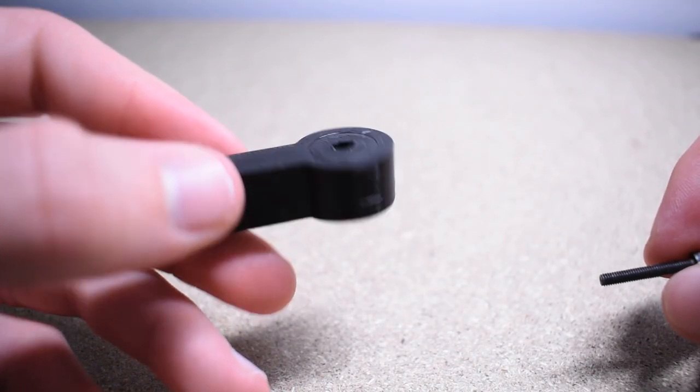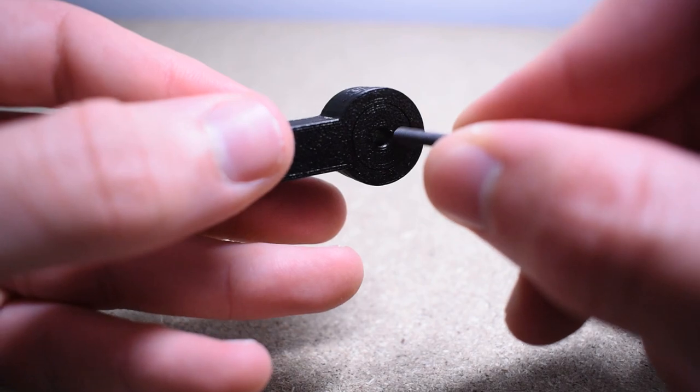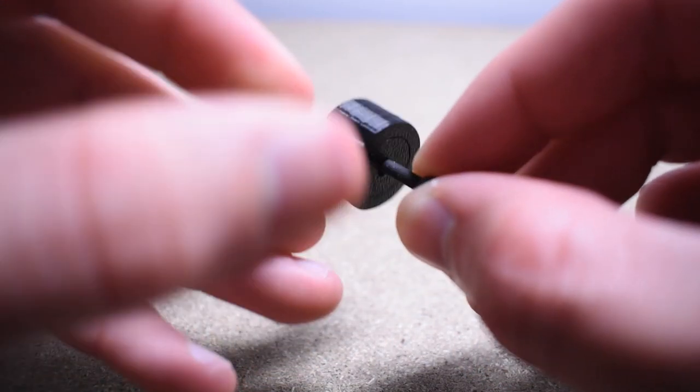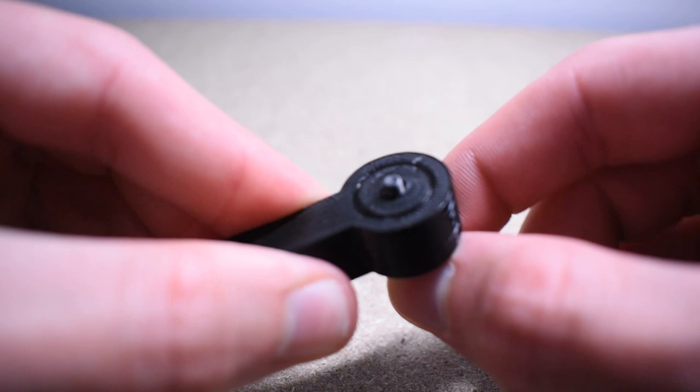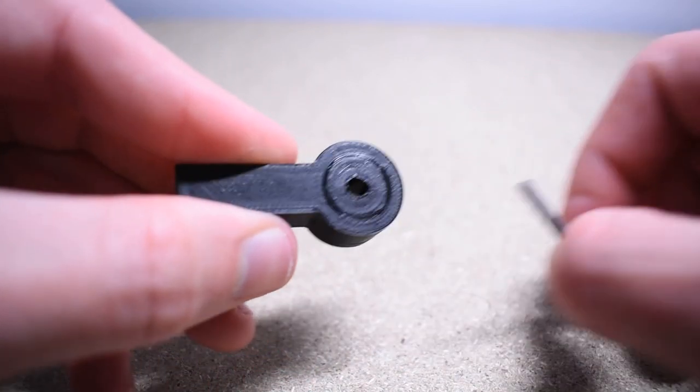I then tried 0.25mm which was obviously a long shot especially since my printer has a 0.4mm nozzle. The gap was too small, the ball had bonded with the socket and therefore it couldn't move.